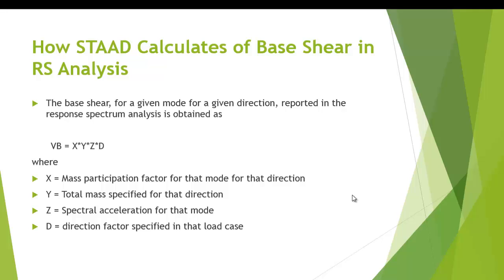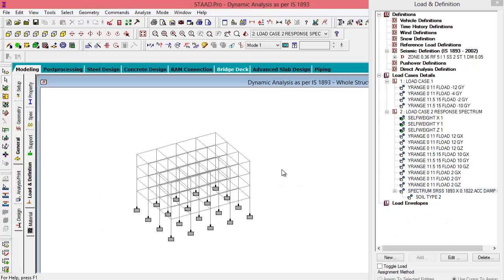VB equals X into Y into Z into D, where X is the mass participation factor for that mode for that direction, Y is the total modal mass specified for that direction, and Z is the spectral acceleration for that mode. And finally the D value is the direction factor specified in the load case.